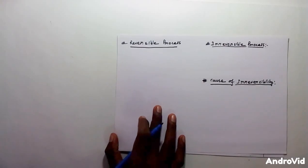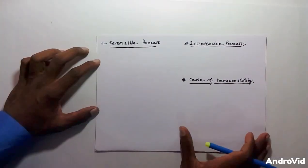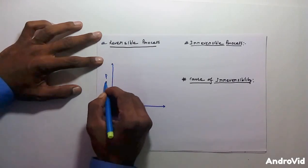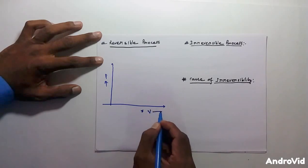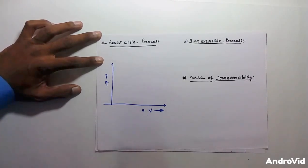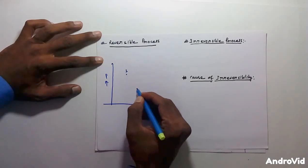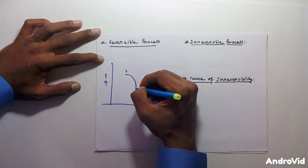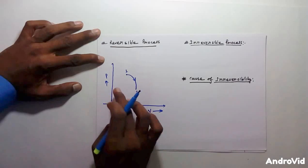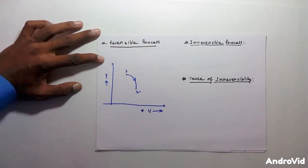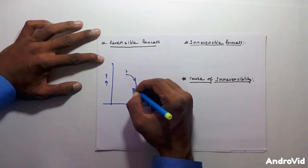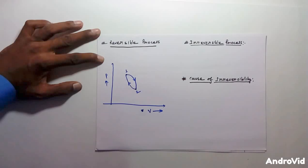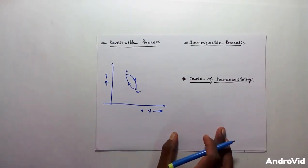Without wasting time, let's focus first on reversible process. Let me draw a PV diagram — this is the pressure axis along the Y axis, and this is the volume axis along the X axis. Suppose this is point 1 and this is point 2. A process 1 to 2 is said to be a reversible process if we can go from 2 to 1 and the system and surrounding do not suffer any change.